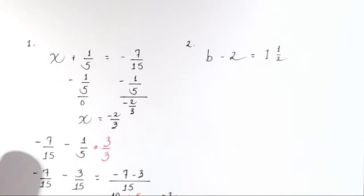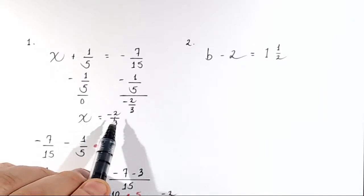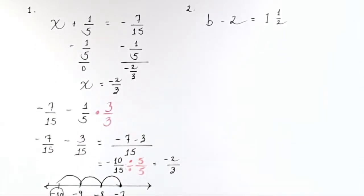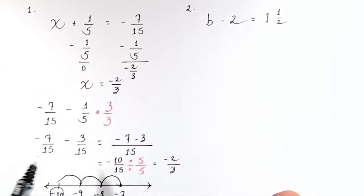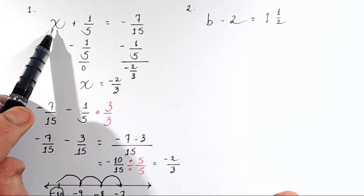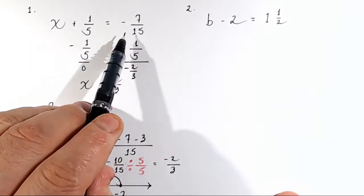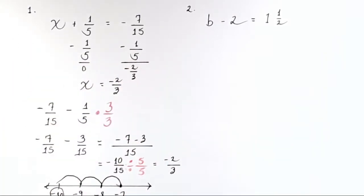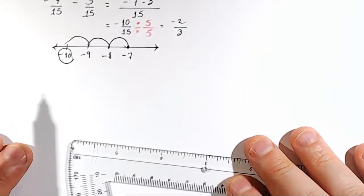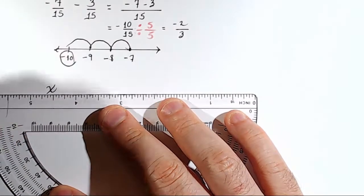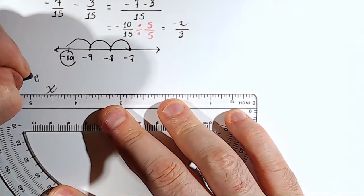So we're almost ready to call it good there. But we've got to check our answer. So we think that x is negative 2 thirds. Let's move down here and test our theory. If x is negative 2 thirds, then I should be able to add negative 2 thirds to 1 fifth and get negative 7 over 15. So I'm going to move down here and rewrite this problem. The problem was, this is my check.